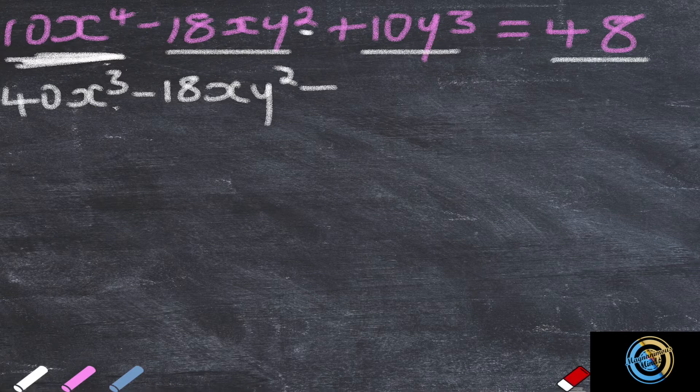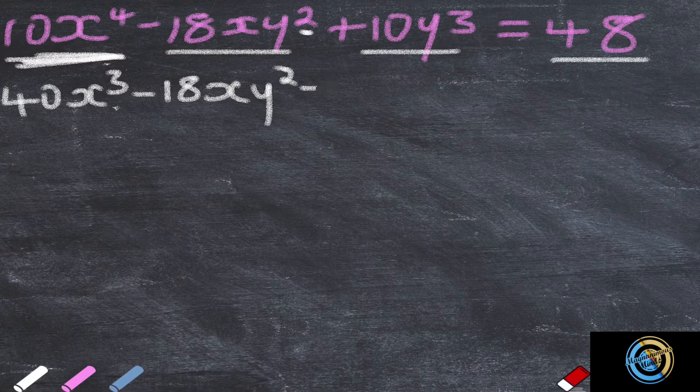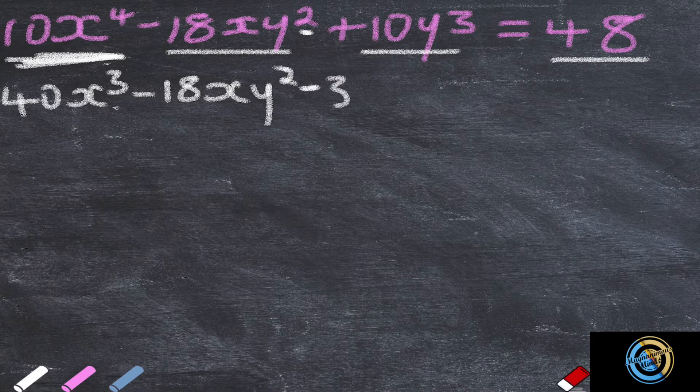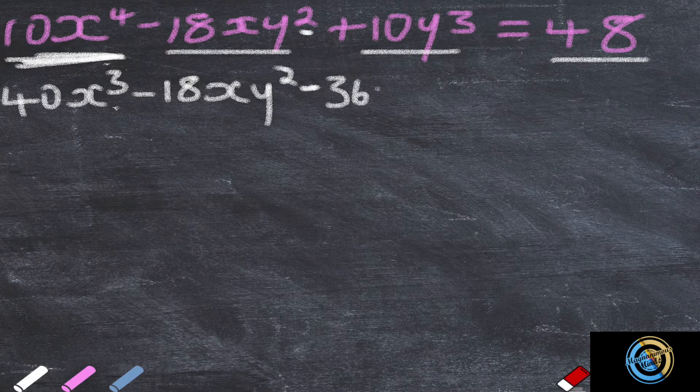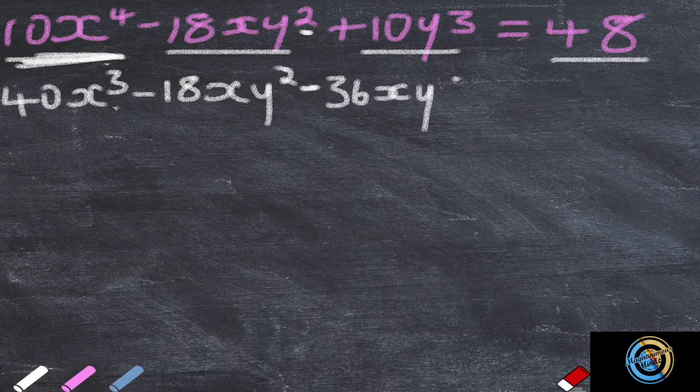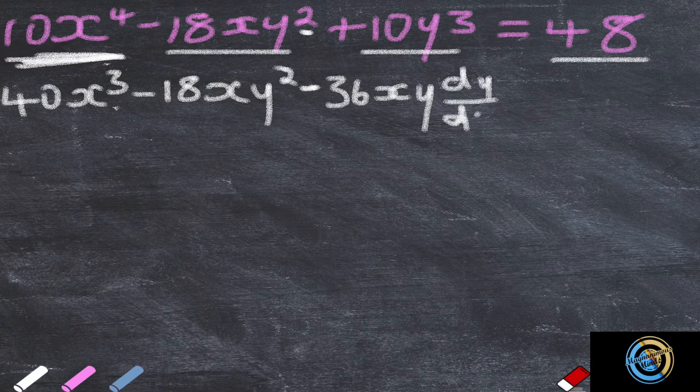Minus, and then we're going to have 2 times 18, which is minus 36x times y, then we're going to have dy over dx.